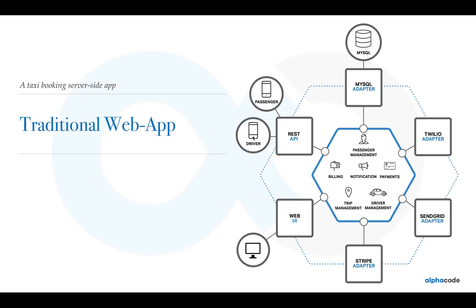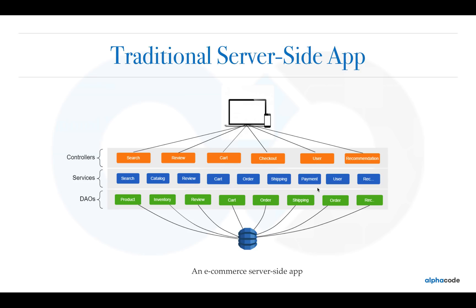You might also have a driver app and passenger app using your REST APIs directly. This is all the outside world you are interacting with using your app. This is basically a monolith because all of your business logic resides within a single application and you only have one database. Although your architecture is modular, the application is packaged and deployed as a single monolith — one big file.